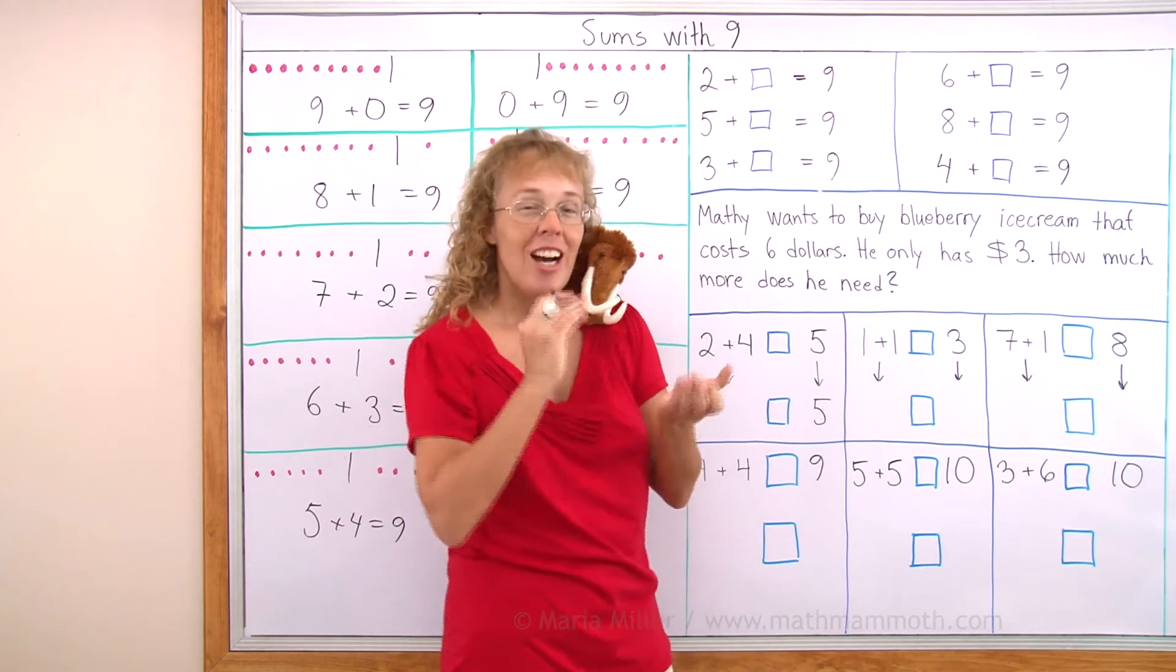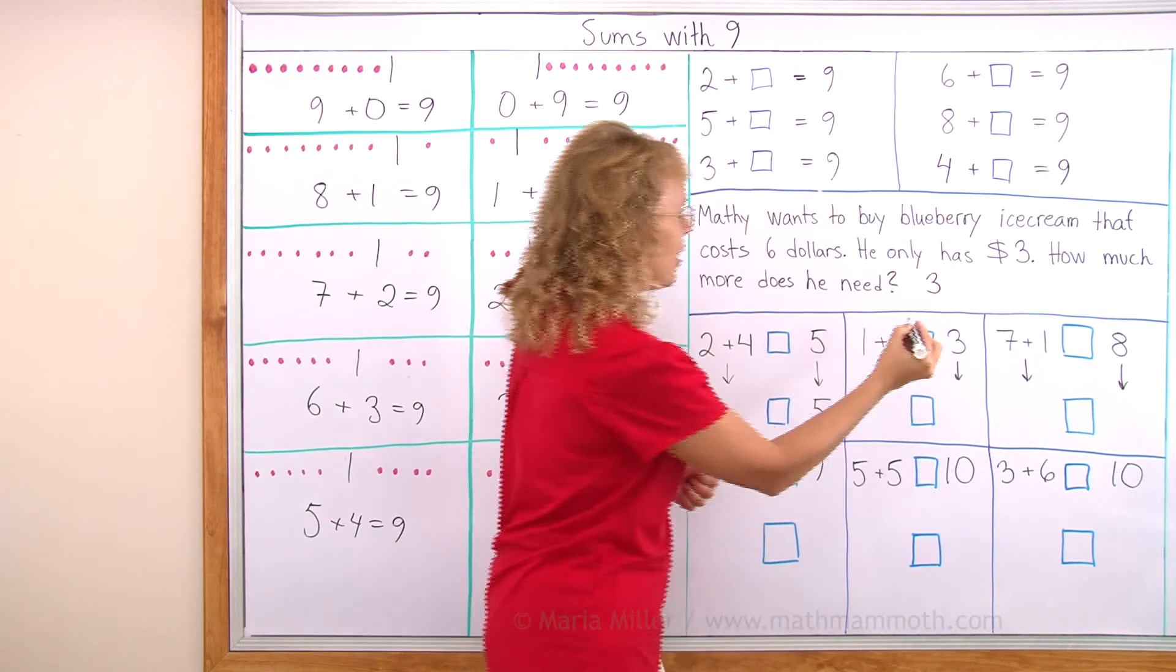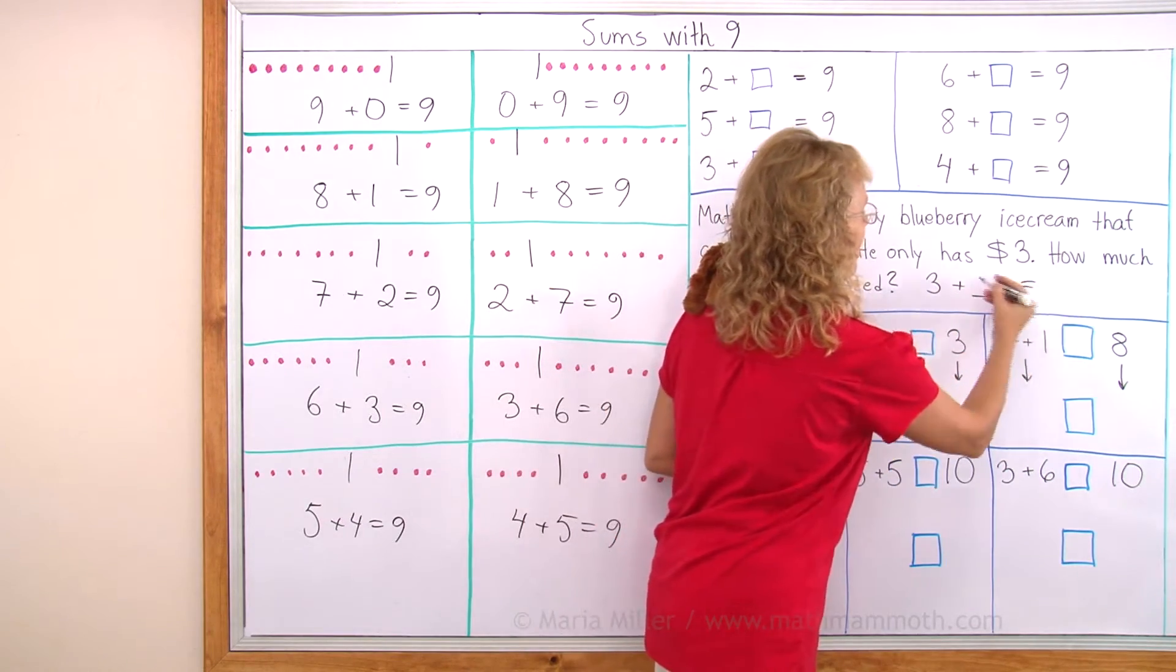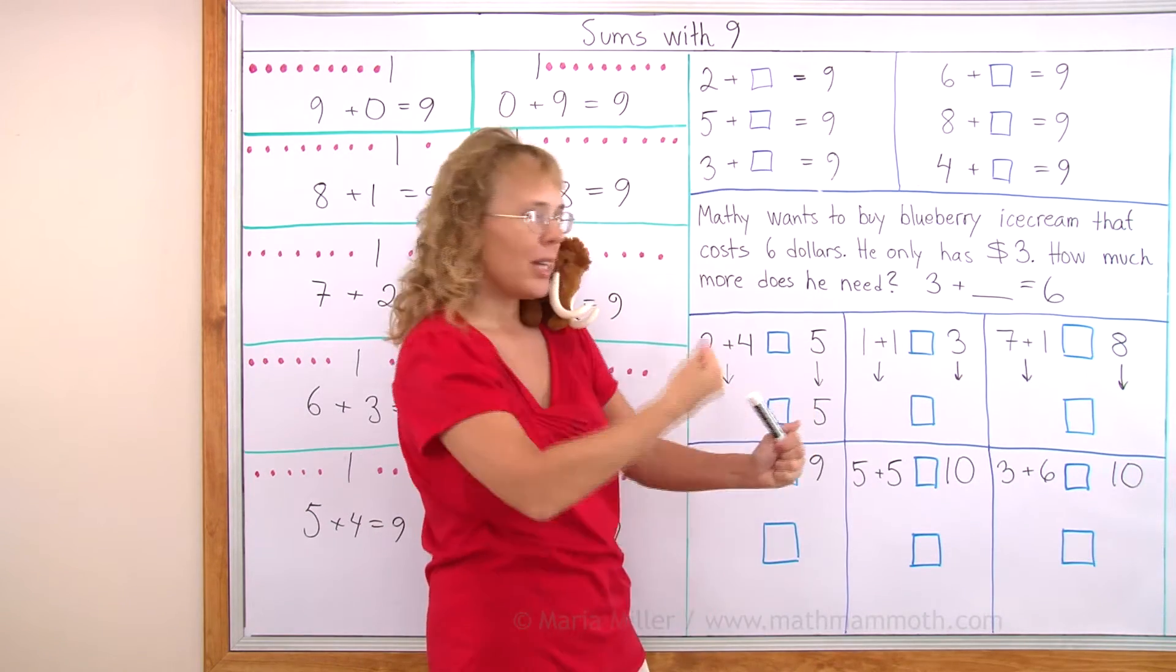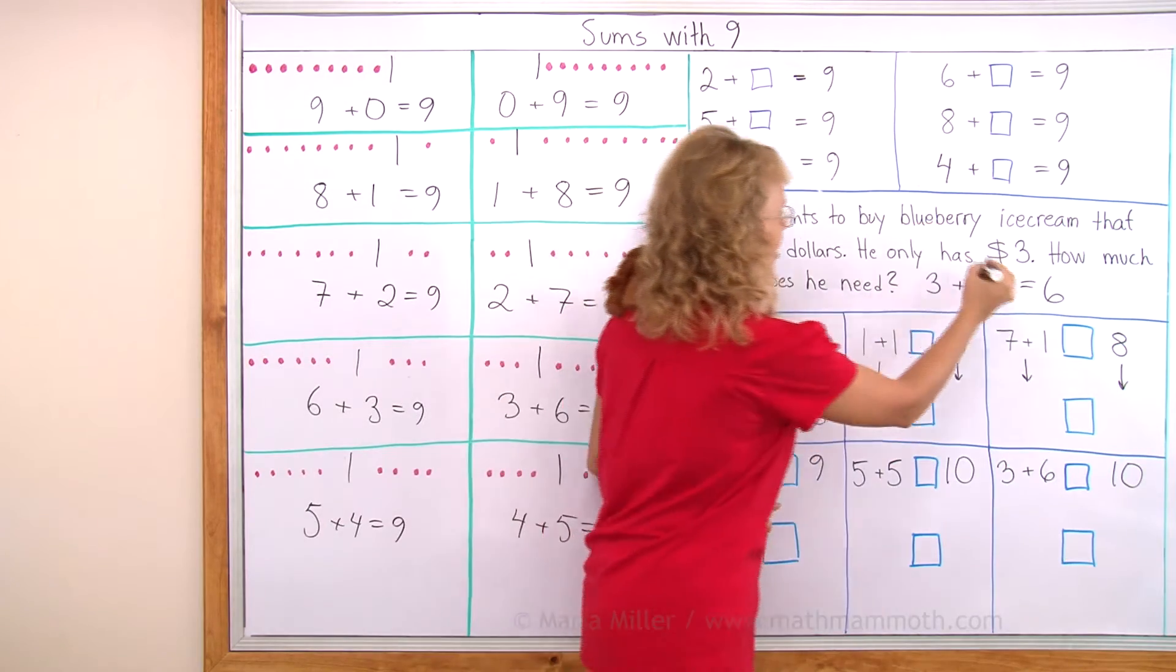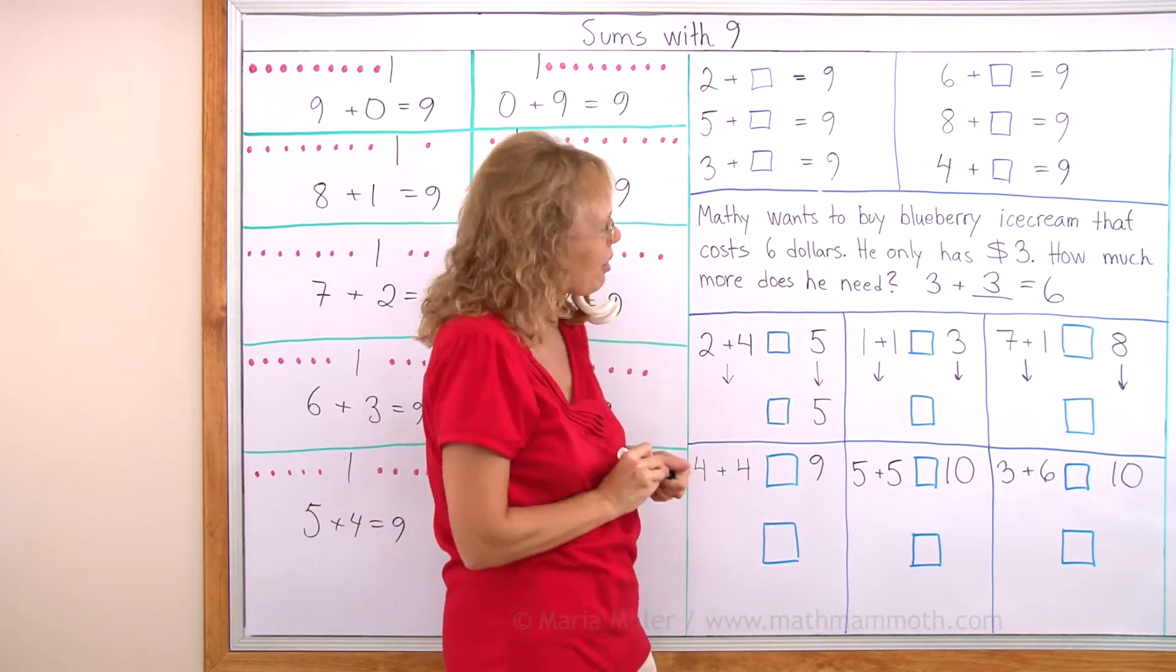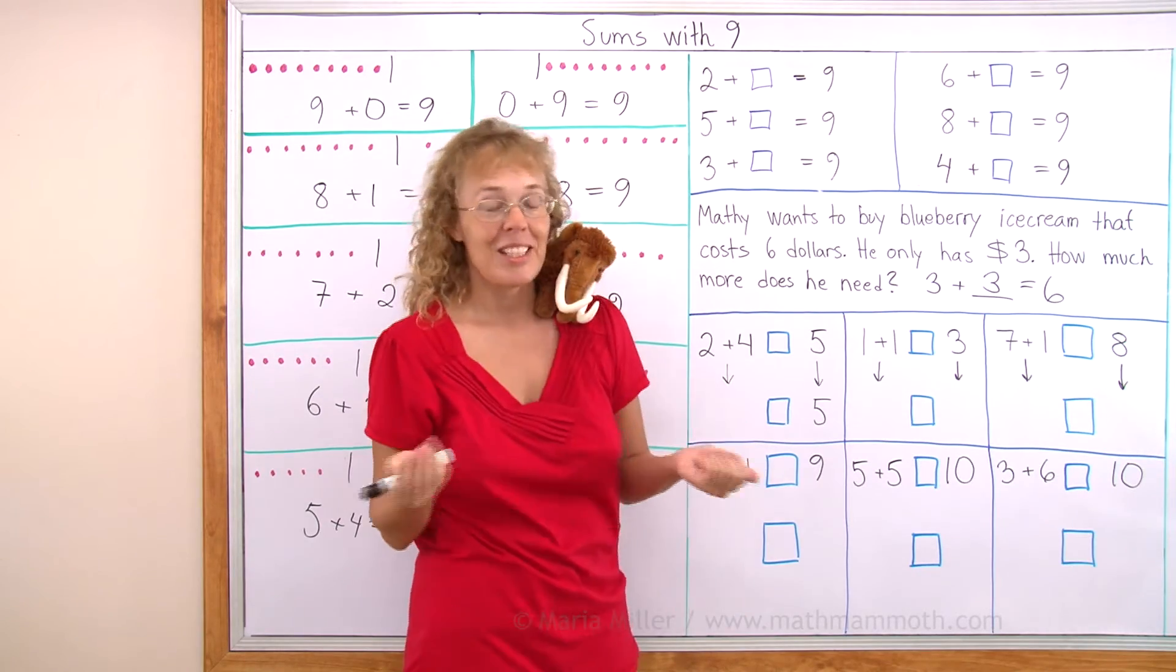But he needs $6 to buy it. I can write how many more additions for this problem. He has $3 and he needs some more, right? We don't know how much more. But then when he gets some more he will have $6. 3 plus how many more makes $6? The answer is $3. Matthew needs $3 more. Maybe he has to go work somewhere, such as pick some blueberries and sell them.